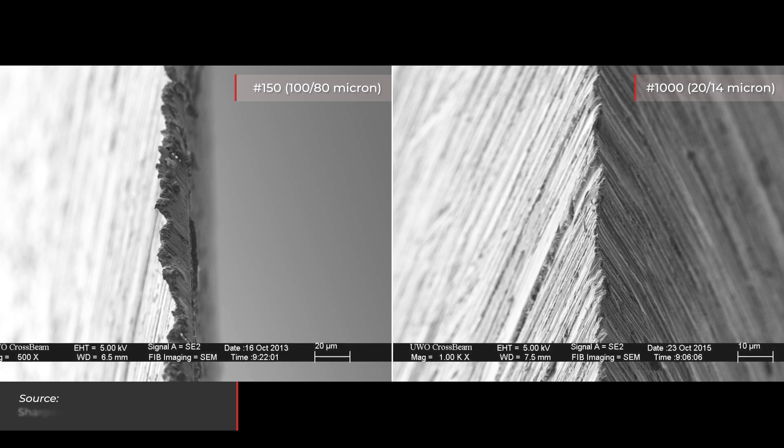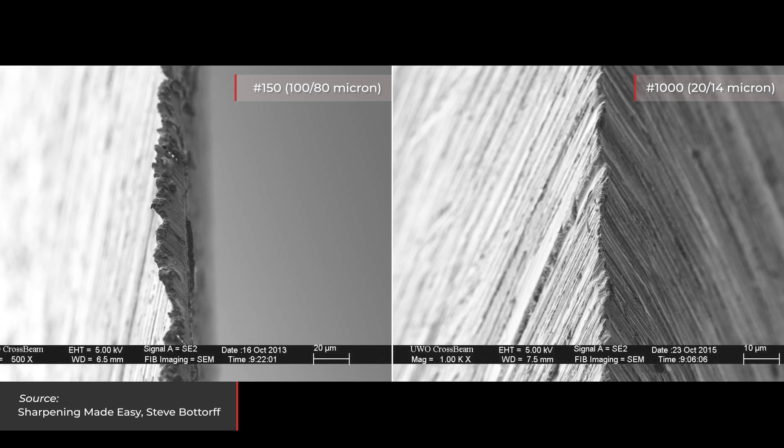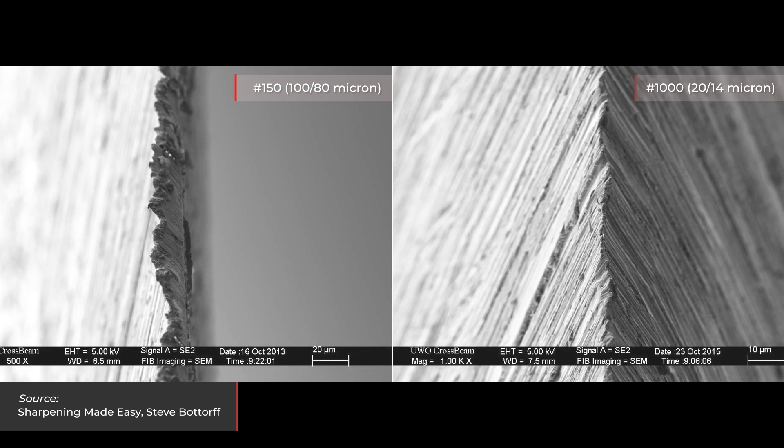The size of the burr that appears during the sharpening process is directly proportional to the gritness of the stone that we use for sharpening.